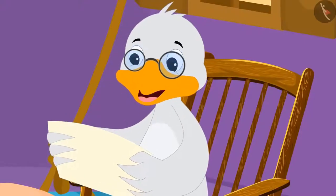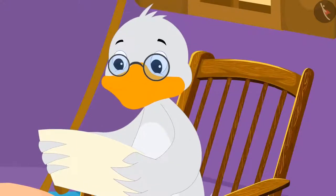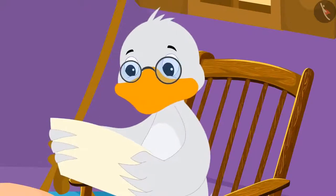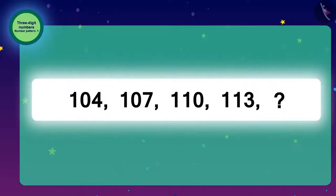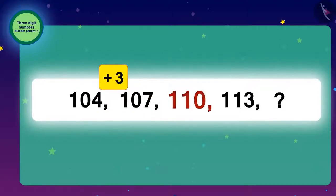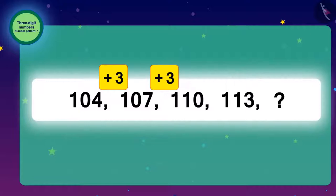Look at the sequence of numbers here. Can you identify the sequence and tell the next number? To get from 104 to 107, we have to add 3 to 104. Then, to get from 107 to 110, we will add 3 to 107. Similarly, we can add 3 to every number and find the next number.